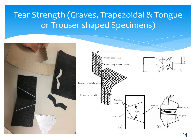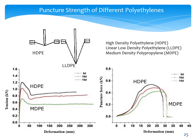In addition to tensile properties, there are tear properties — several different tear methods exist. Here you see the contrast of three: the trouser tear, the graves tear, and the trapezoidal tear. You have to specifically ask what you're looking for and what the material is — scrim-reinforced, geotextile, or geomembrane. Each one has a different optimal method for both QC and QA.